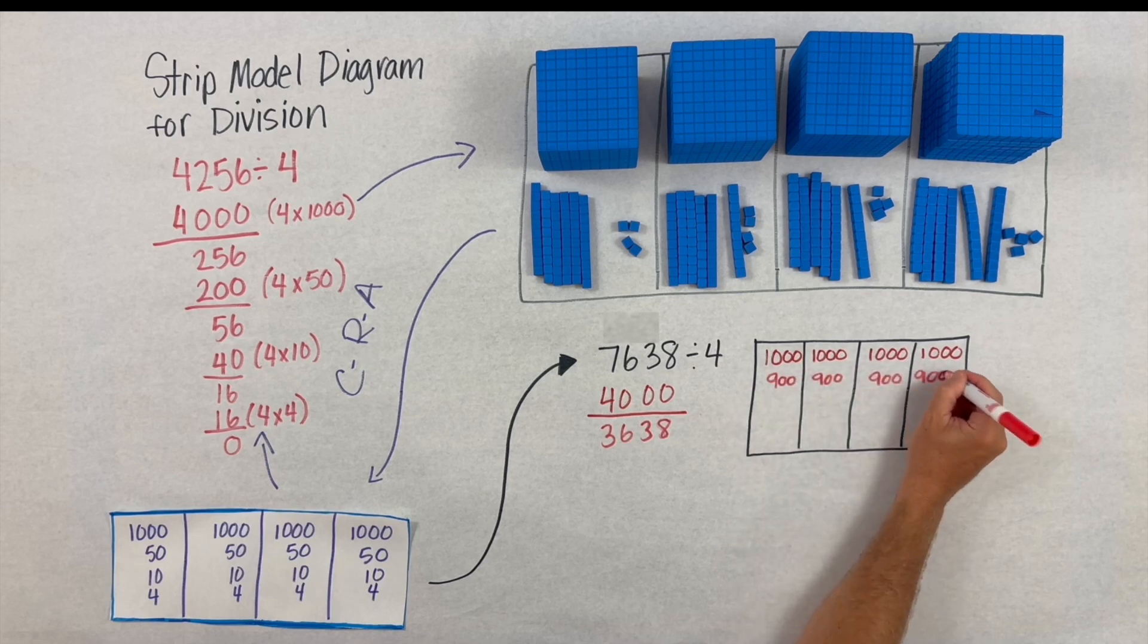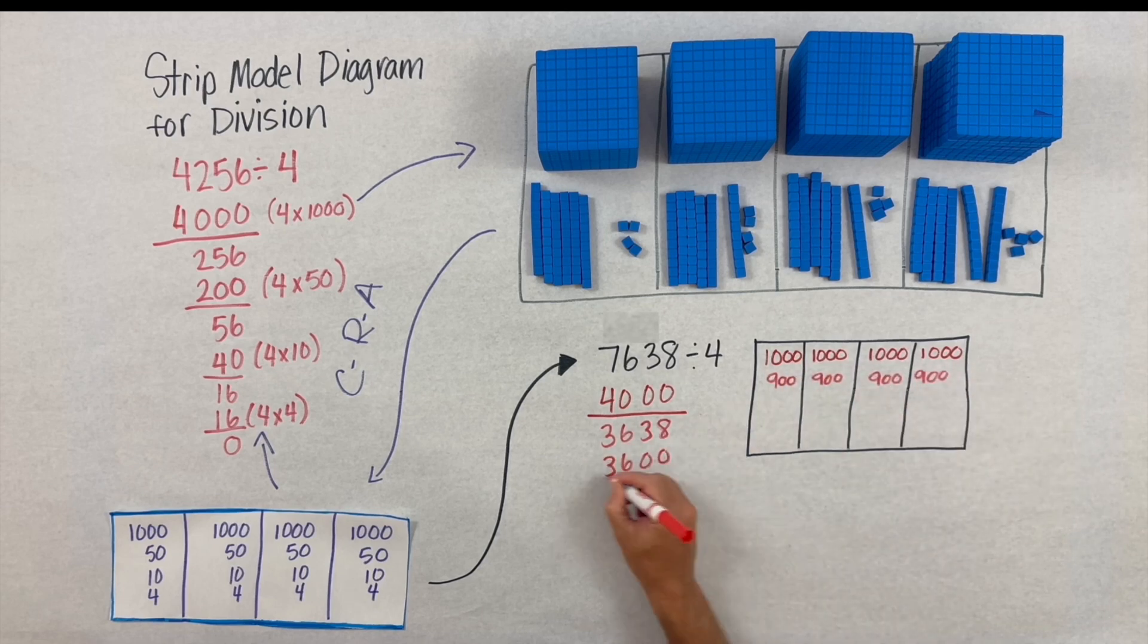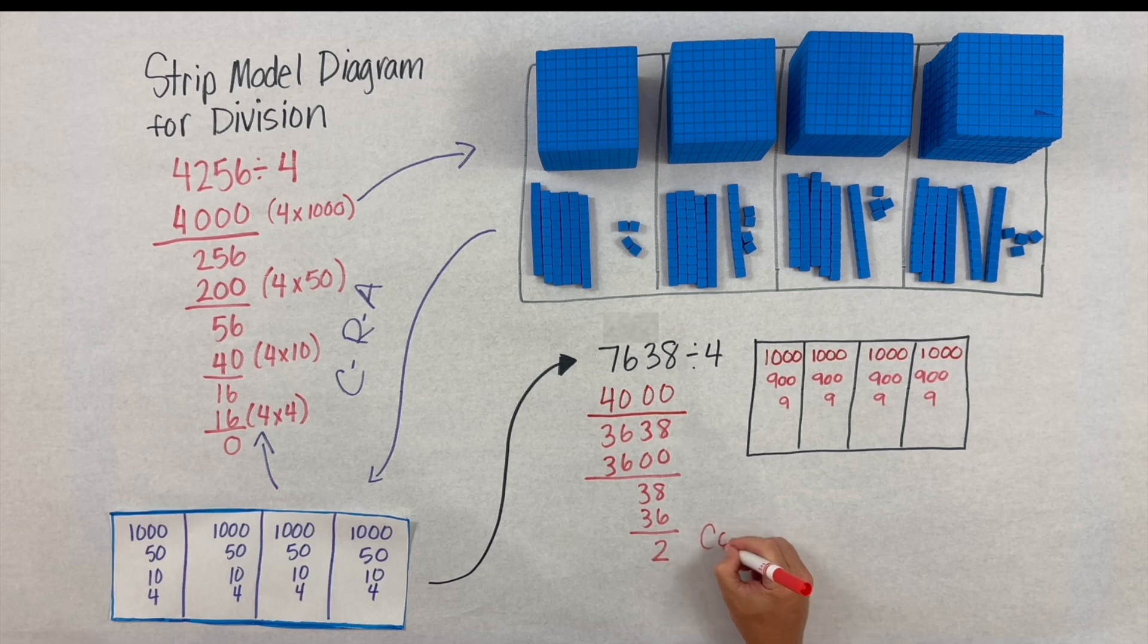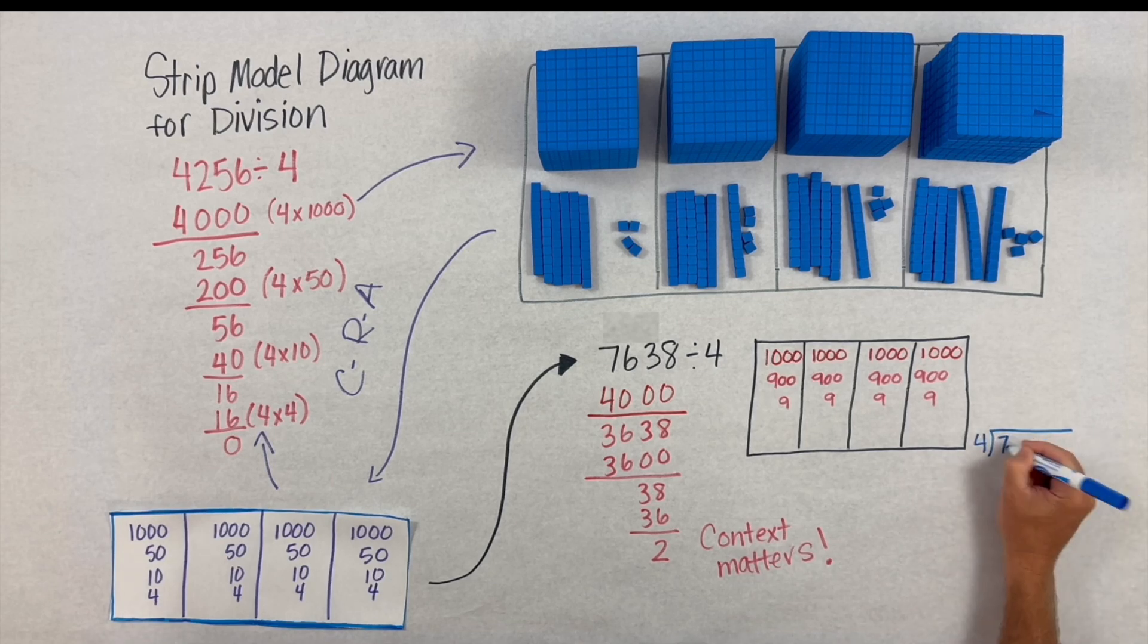Here you can see that we took our thousands first. Then a student might look and see, 'Oh, I have 3638 left. I know 4 times 900 is 3600. That's the most efficient.' At the end you can see that we have a remainder of 2, and that's where context matters.